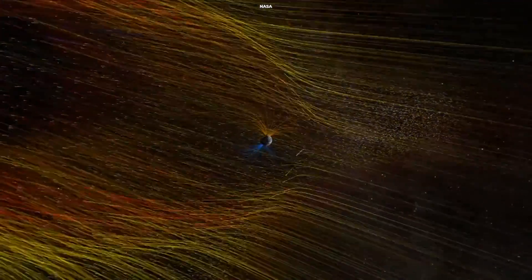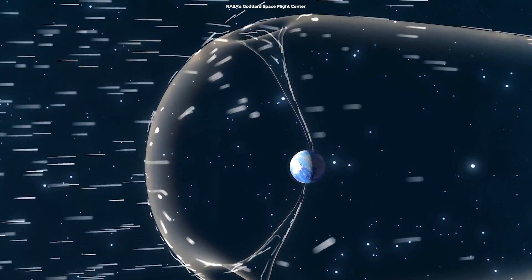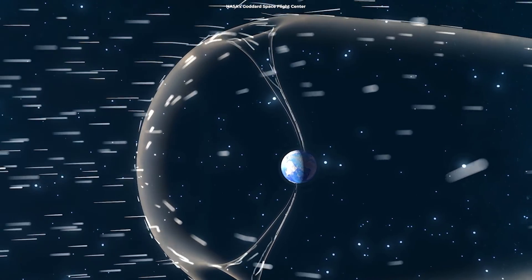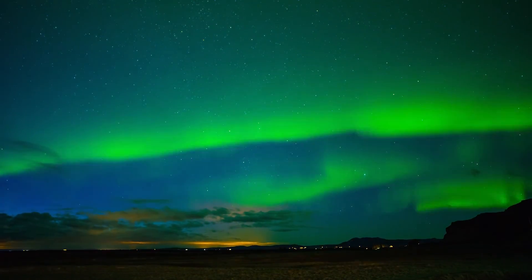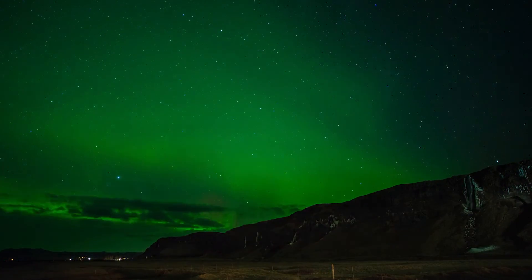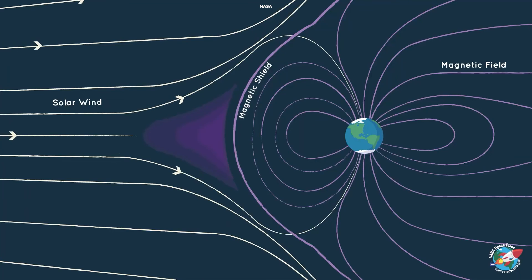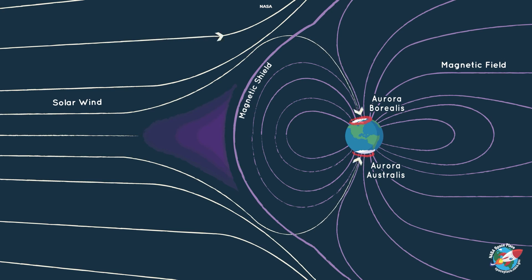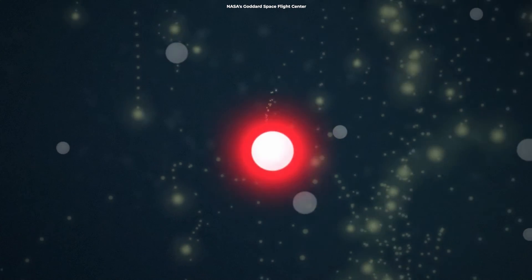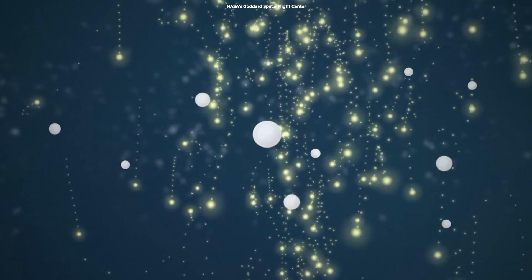Back home on Earth, our planet's magnetic field acts like a protective shield and deflects many of these charged particles, but some do get through — and the result? The breathtaking auroras, or the northern and southern lights. These mesmerizing light shows are the result of particles from the solar wind colliding with our atmosphere, exciting gases and causing them to emit beautiful colors.